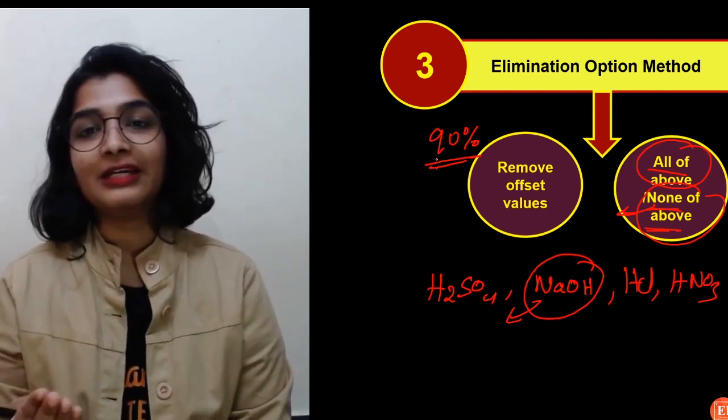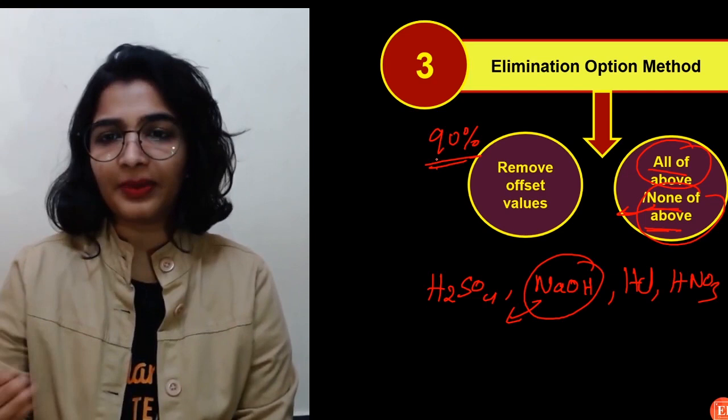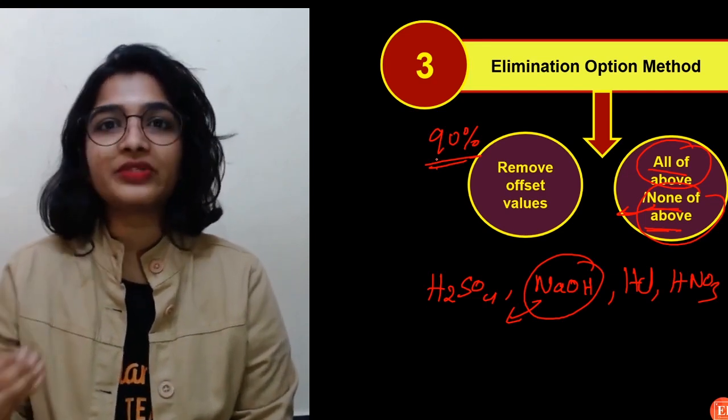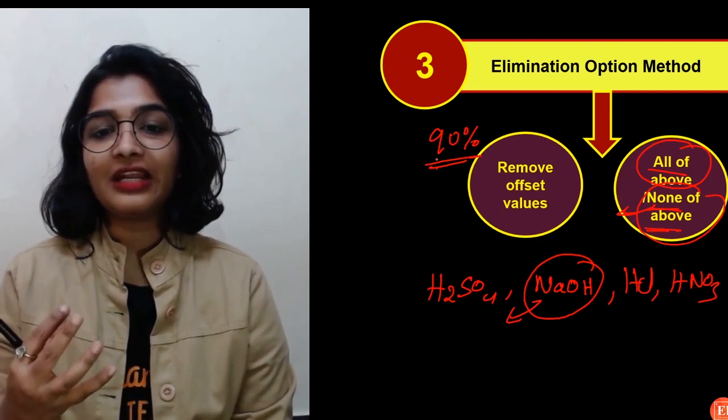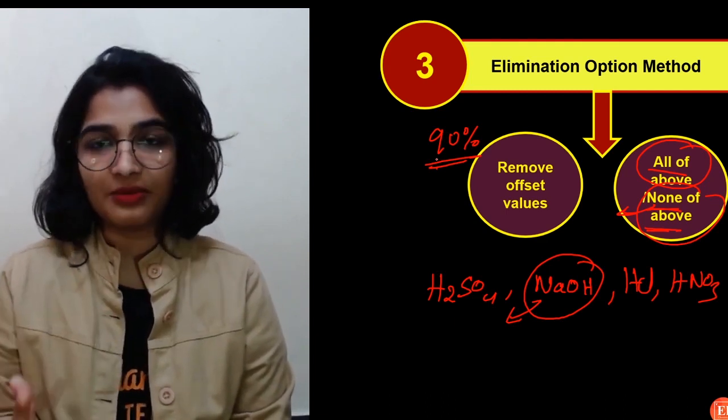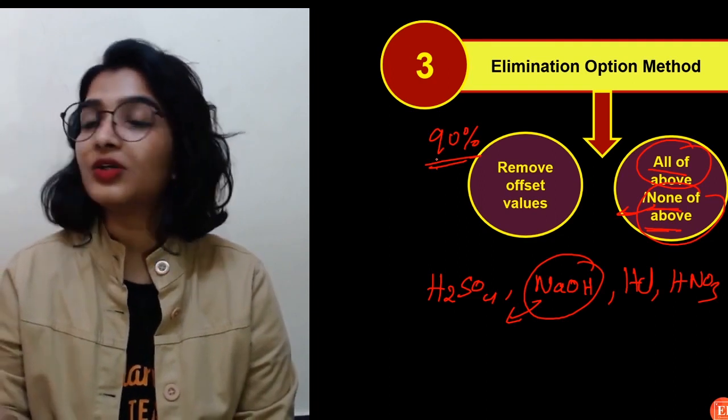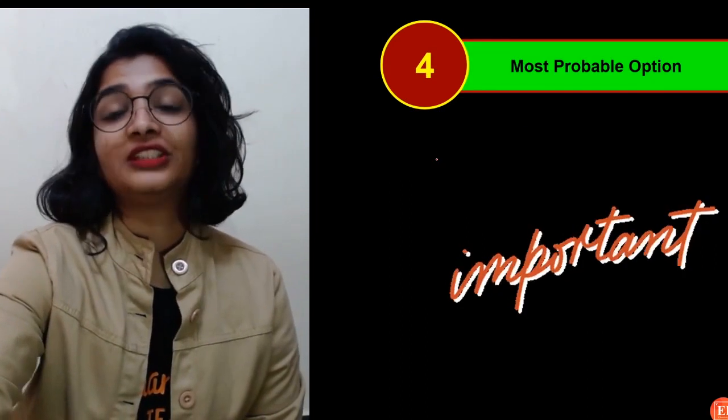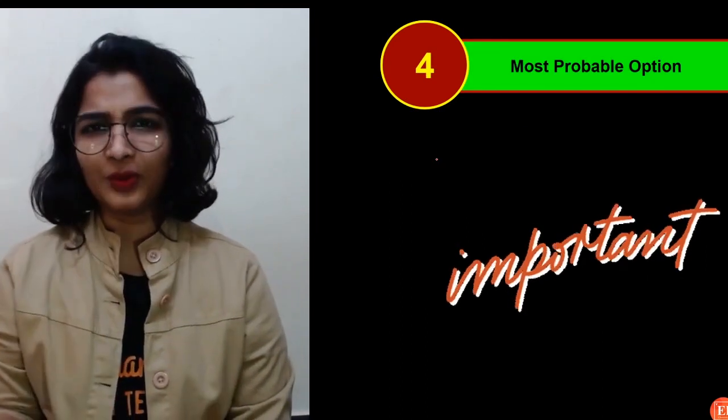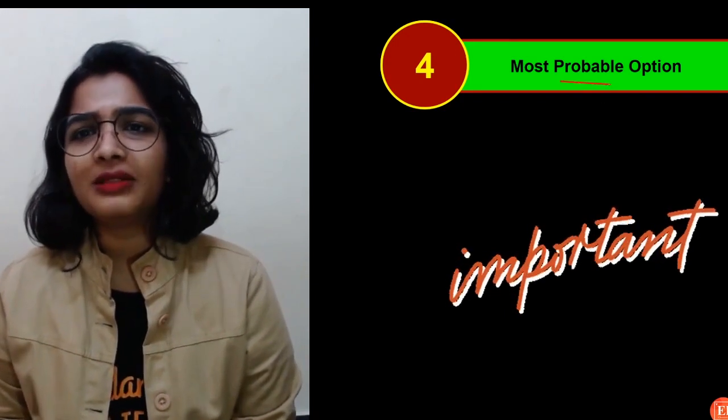So elimination option method. Try to remove the offset values and all of the above, none of the above. So 90% of the time, that will be the right answer. So if you don't, if you're not very sure, please, whenever you're studying, whenever you're preparing, try to observe all these tiny details. Because whenever a person sets the question paper, they have, they will have certain things in their mind, right? So and they have always followed it, they will follow it. So just go through the question papers and let me know if we are not right.